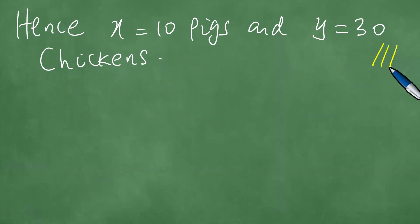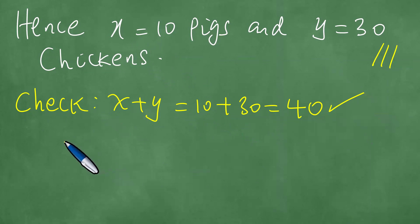But let us do a quick check of the answers. We know that X plus Y must be 40. Let us check here. X is 10 and Y is 30, so that indeed we have 40 pigs and chickens in the farmyard.